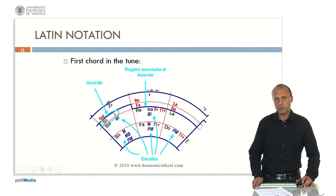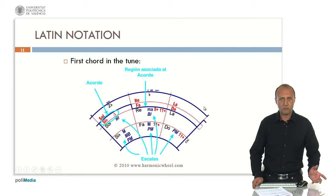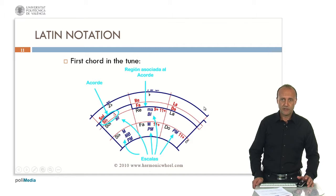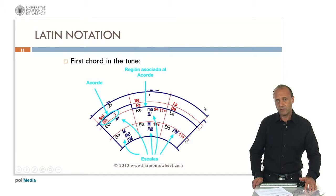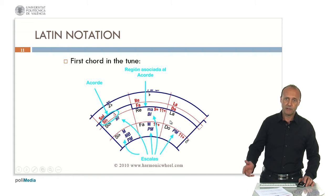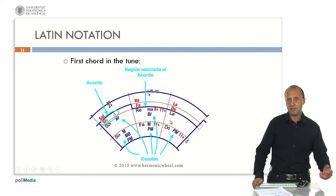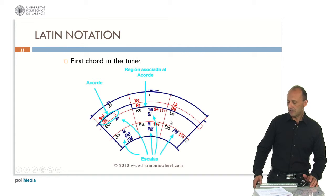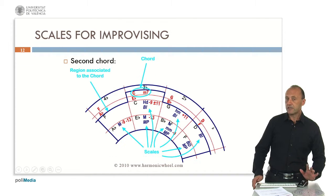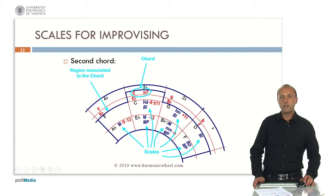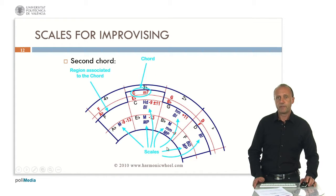For those musicians who prefer the Latin notation, there is a different version of Improchart with notes Do, Re, Mi, Fa, Sol, La, Si instead of A, B, C, D, E, F, G. In this example we will use the English notation.